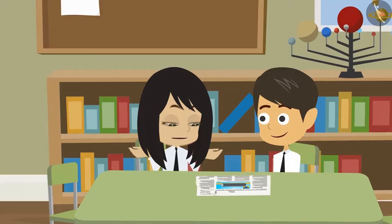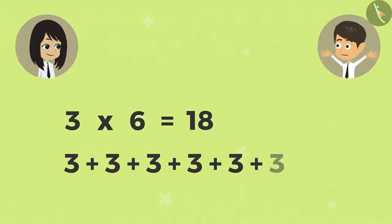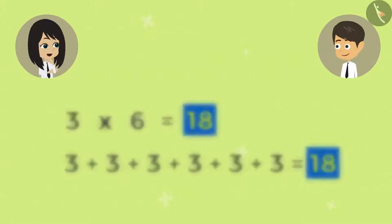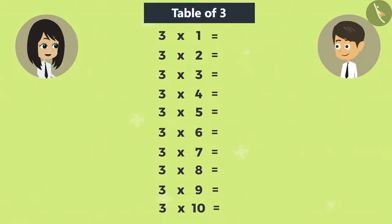What do you mean? Look, if 3 is multiplied by 6, then the answer will be the same as adding 3 six times. So we can fill this table by adding 3, then it will become a Multiplication Table of 3.